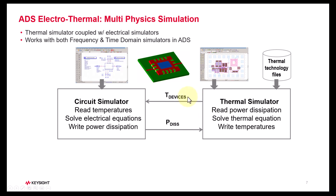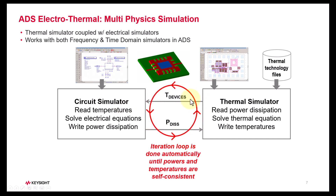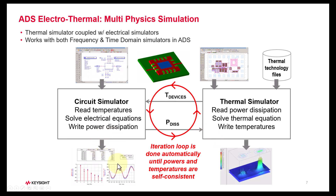After thermal simulation, the temperatures are passed back to the circuit simulator, which has temperature-dependent components. This temperature is now used instead of the initial temperature on which the earlier response was calculated. This loop continues to operate until the powers and temperatures between the components are self-consistent, meaning we have achieved steady state performance. After that, you can look at the circuit performance and the impact of temperature on it. At the same time, you can open the thermal viewer and look at the thermal profile of your chip to notice the temperature rise in various layers and how thermal coupling is occurring. So this is a full closed-loop simulation.